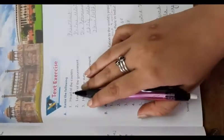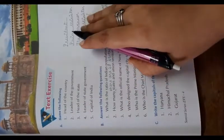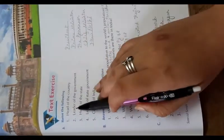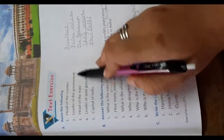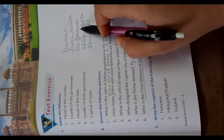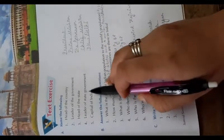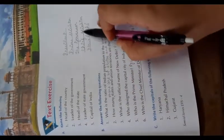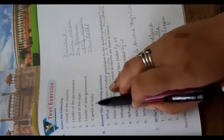Now first, head of the country is President. Leader of the government is Prime Minister. Head of the state is the Governor. Leader of state government is Chief Minister. And the capital of India is New Delhi.